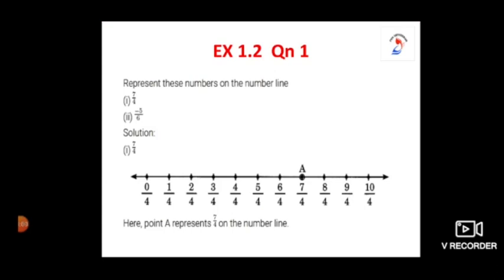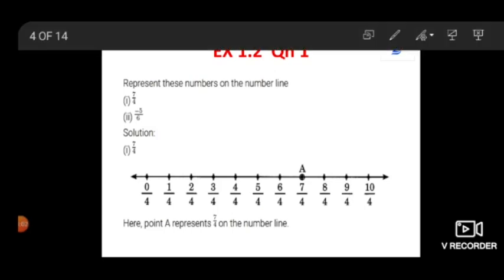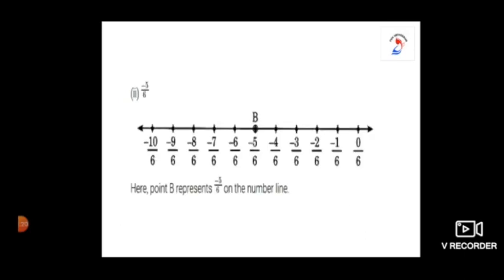Question number 1: represent these numbers on the number line. Number 1 is 7 by 4. As soon as I say the number 7 by 4, you can understand that it is a positive rational number. The next one is minus 5 by 6. As soon as I say the number minus 5 by 6, it is a negative rational number.